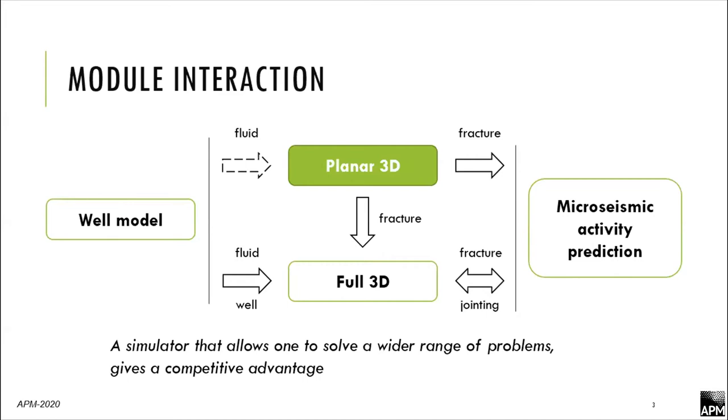In terms of practical use, we can calibrate our models, especially full 3D model to use it in case where we have a lot of natural fractures, and we can't use such classic models like pseudo 3D. We're not sure can we use Planar 3D because it only allows the fracture to propagate within a plane. So we can switch from Planar 3D model to full 3D statement, and it allows us to describe interaction between different fractures.